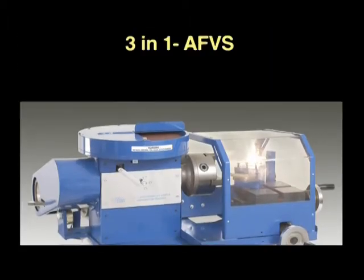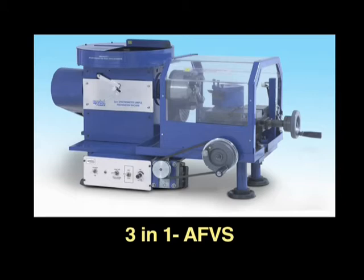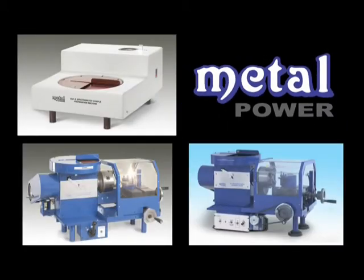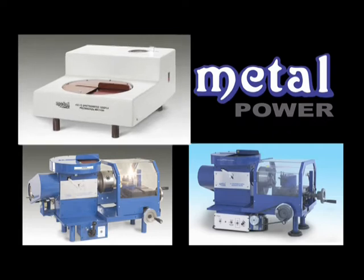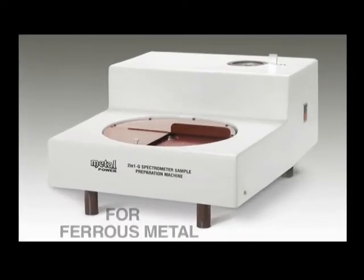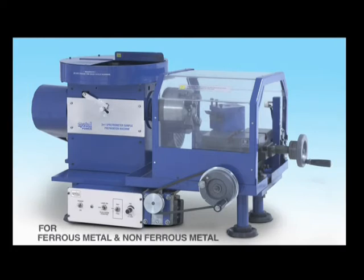3-in-1 and 3-in-1 AFVS as per customer requirements and applications. The 2-in-1 G is a ferrous metal-specific machine, whereas the 3-in-1 series are versatile and work for both ferrous and non-ferrous metals.